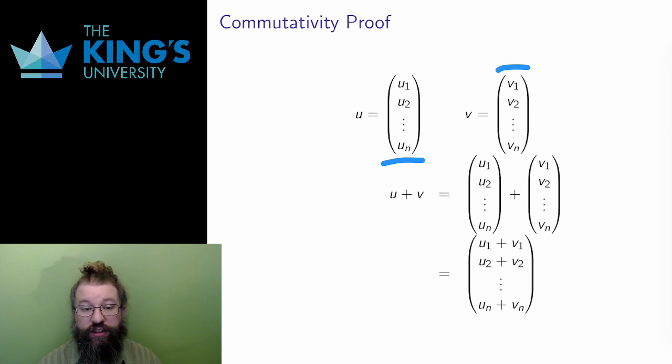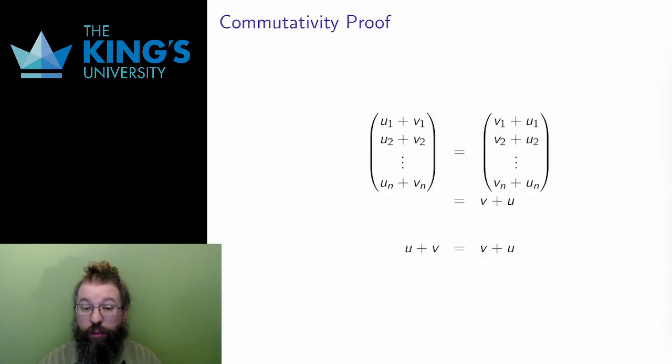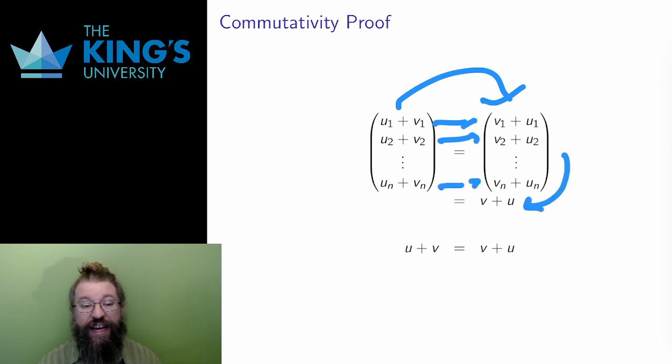Write the vectors as components. Use the definition of vector addition. Inside the vector addition, use the normal commutativity of number addition. Then recognize that the result is the desired v plus u. The conclusion is that u plus v is equal to v plus u for any vectors in Rn. That vector addition is commutative.